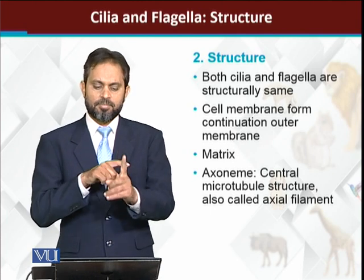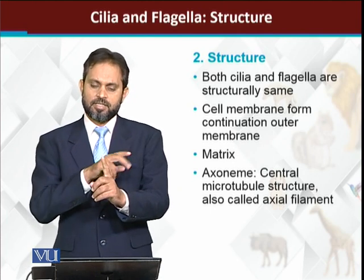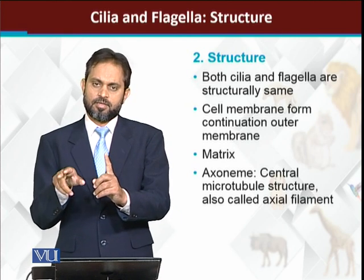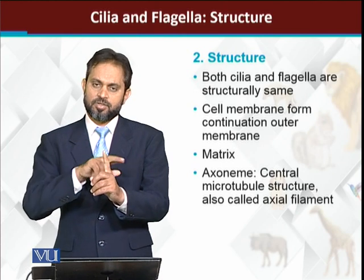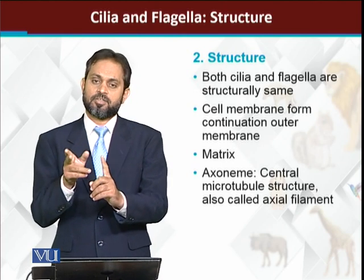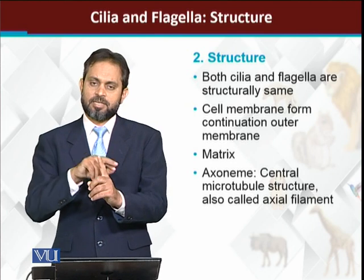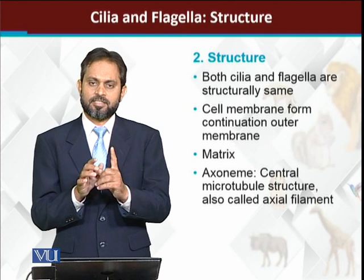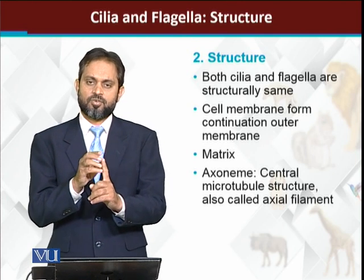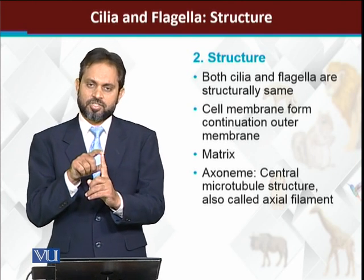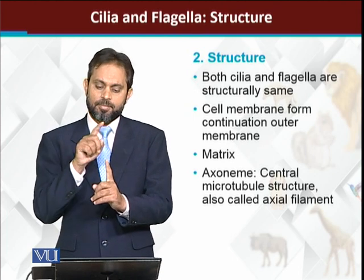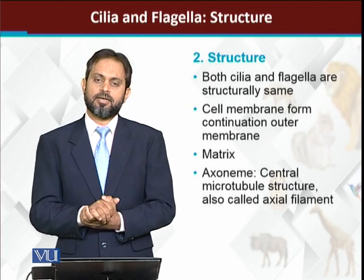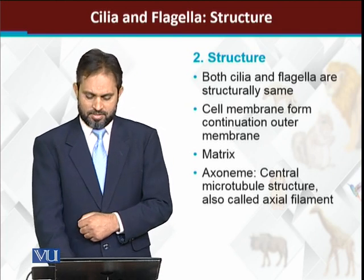Looking at the overall microscopic structure of cilia or flagella, the cell membrane forms a continuation and covers them on the outside. So the outermost boundary of cilia and flagella is the cell membrane - like a sheet of cell membrane covering them. In the center is a rod-like structure called the axoneme. The material between the membrane and the axoneme is called the matrix.